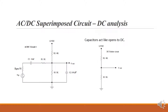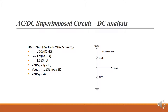Because capacitors act like opens to DC, we can redraw the DC circuit. We have 12 volts with R2 in series with R3, and Vout across R3. To find Vout DC we use Ohm's law — IT equals VDC divided by R2 plus R3. In this example, IT is 1.33 milliamps and Vout DC is 4 volts.